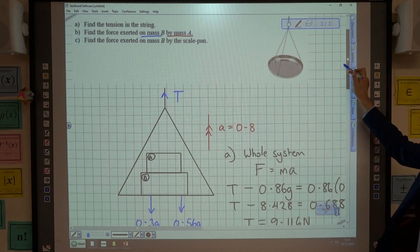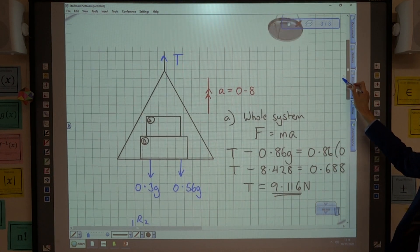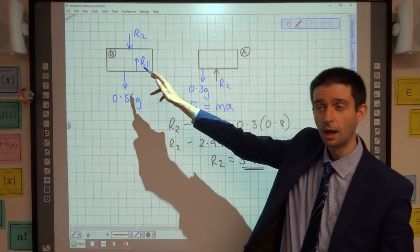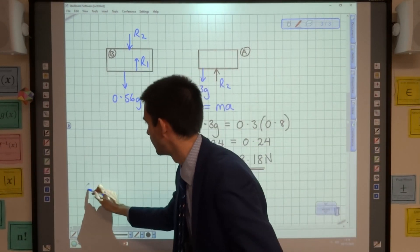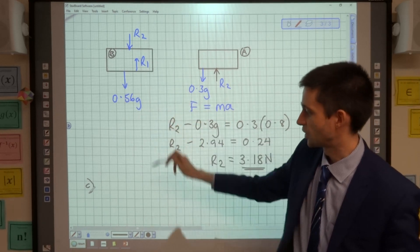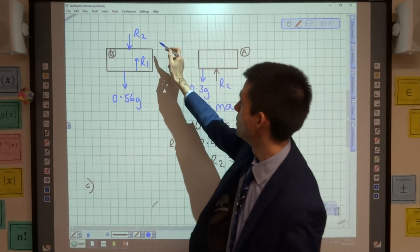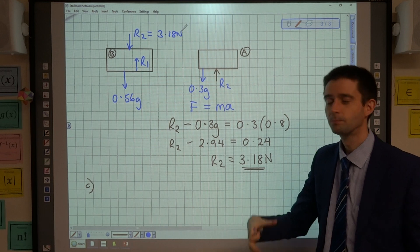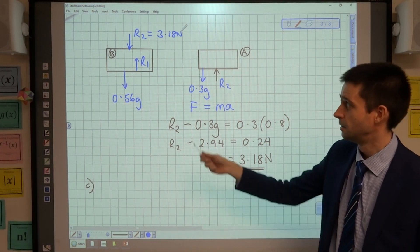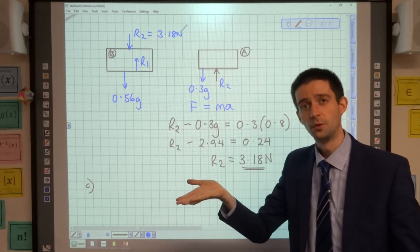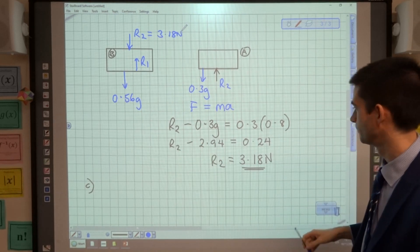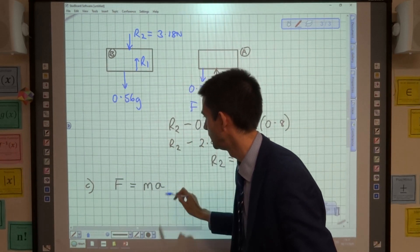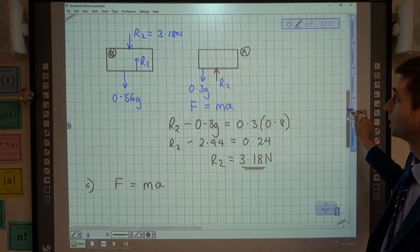So part C, we're asked for the force exerted on B by the scale pan. Well, the force exerted on B by the scale pan is what we've done here that we've called R1. So if part C, we consider this reaction 1 that we're trying to find out, and we now know that R2 is 3.18 newtons, we can work out using F equals MA this force reaction 1, which is the base of the scale pan exerting on mass B. So again, resolving in the direction of motion, resultant force equals mass times acceleration.